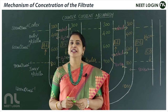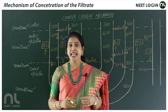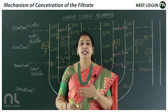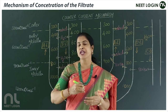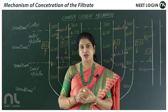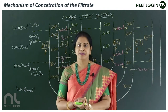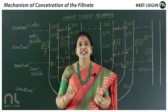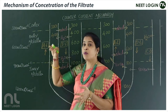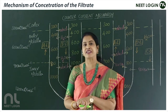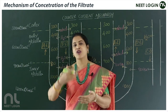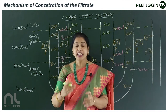Moving on to another important concept: the mechanism of concentration of the filtrate. Man excretes hypertonic urine — more concentrated urine compared to blood. The concentration here is measured by osmolarity, based on solutes and water. The blood osmolarity gradient is 300 milli-osmoles per liter. Man excretes urine at least four times greater than this concentration.